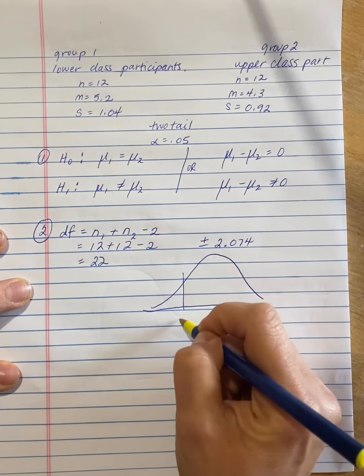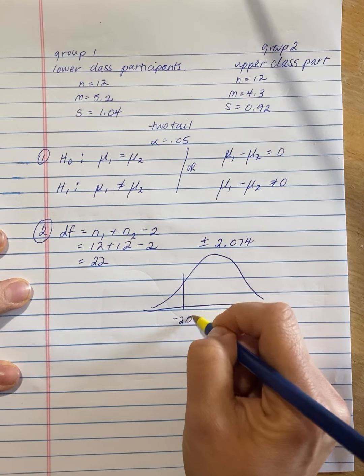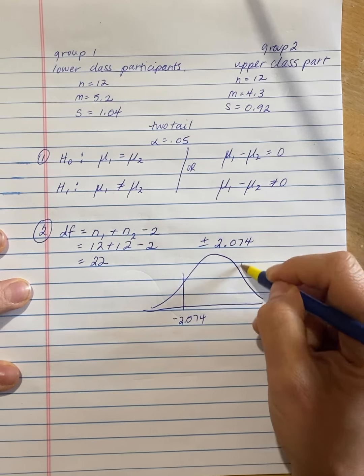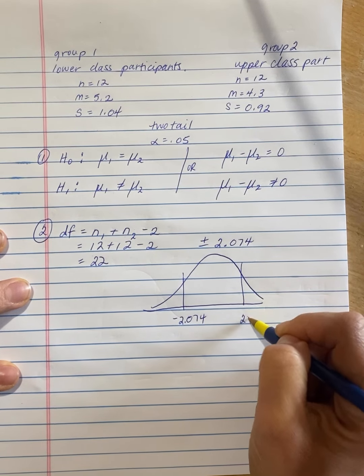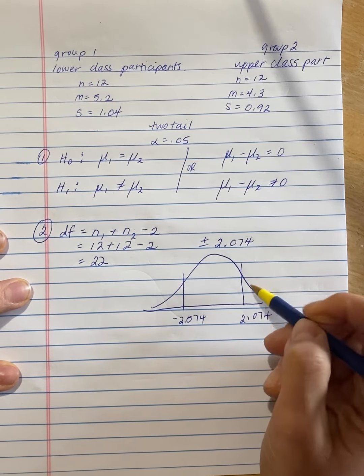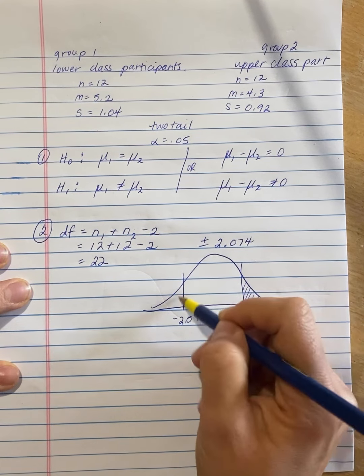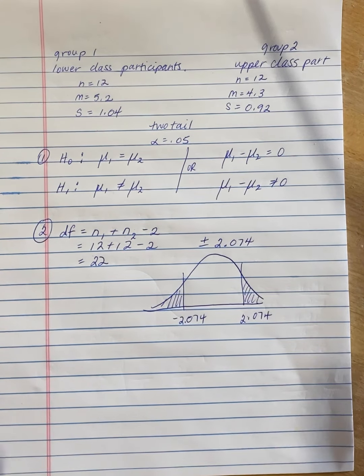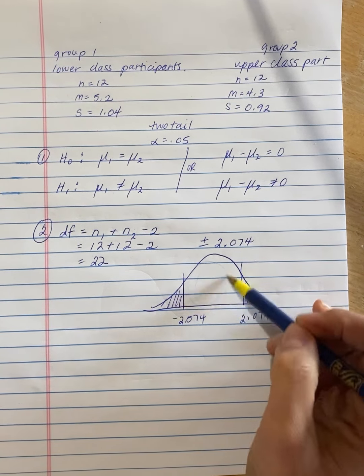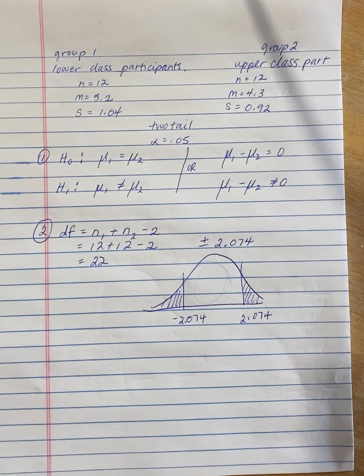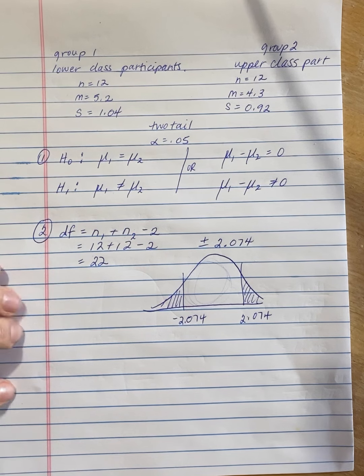So what that'll look like if we draw it out, and I always recommend you draw it out, is like this. And anything that falls in these tails, that's going to be where we reject the null and accept the alternate. And anything in this middle area right here, we're going to fail to reject the null, and we don't make any statement about the alternative hypothesis.